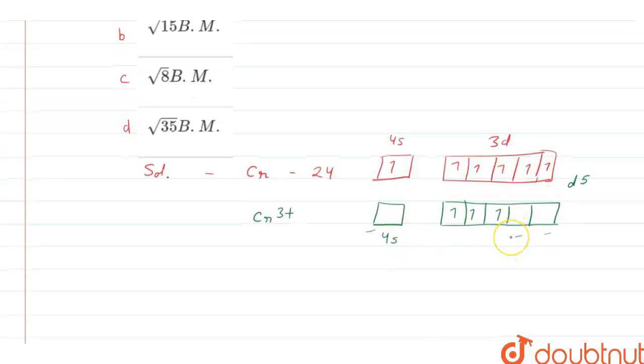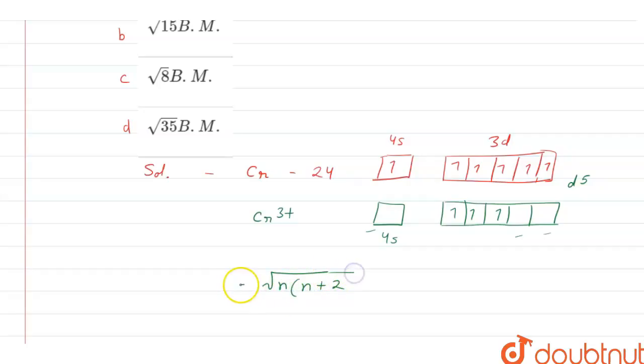Now, as we are going to calculate the spin-only magnetic moment of the chromium, how it can be calculated? Like this. So, this formula will give us the value of magnetic moment. N is the number of unpaired electrons here.